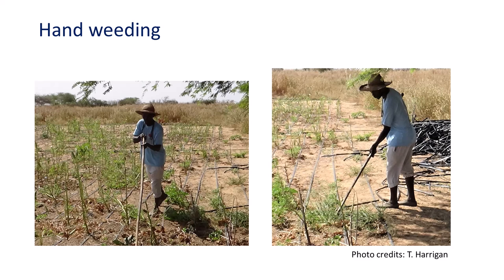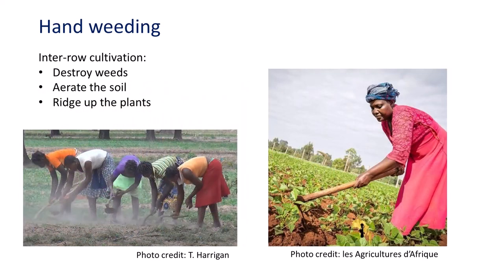Long-handle hoes allow weeds to be cut by pulling and pushing the tool below the soil surface, with good maneuverability and tool reach in a tall row crop. These young girls are weeding maize in Burkina Faso with a short-handle chopping hoe. Weeding is difficult and tedious work, often made more difficult when weeds are allowed to grow so large that very aggressive weeding is necessary. Inter-row cultivation destroys weeds, aerates the soil, and ridges up plants. Heavier tools are better in fine-textured soil for weeding and aeration, and lighter ones on light soils to uproot weeds.